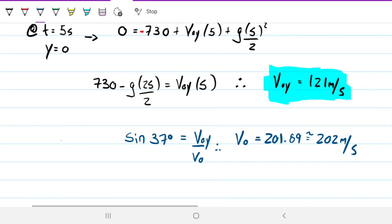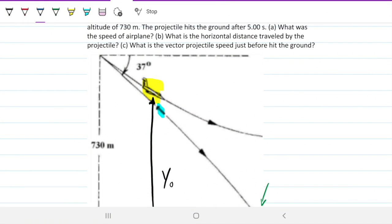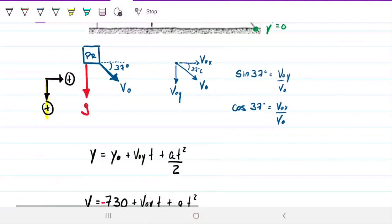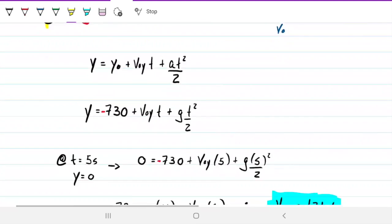Because when the projectile detaches from plane at the exact instant it detaches from the plane, they have the same velocity. And that velocity is 202 meters per second. What is part B? So this is part A. Part B.